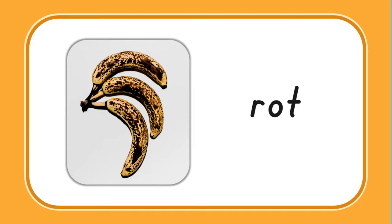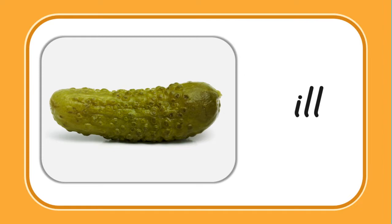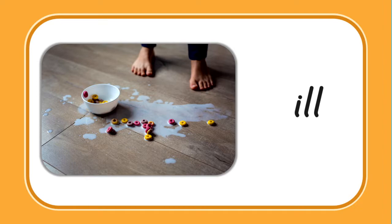From the -ill family, it's a kind of pickle or it could be a seasoning. Do you know what that is, Polly? I don't know what that is. Let me help you — it is a dill pickle. Dill. So what letter do I need for dill? D. I need to add a D to the beginning of that -ill family. Dill. Try this one: if I knock over my bowl of cereal, I had a... Spill! And what letters should I add to the beginning of the -ill family? S-P. There we have it — spill!